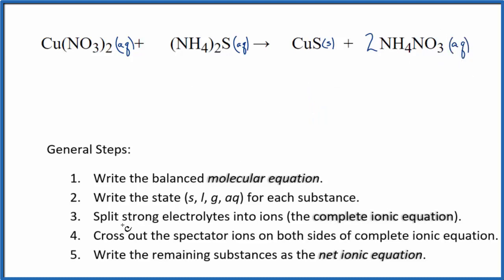Once we have these states, we can split the strong electrolytes into their ions for the complete ionic equation. So we don't know the charge on copper. It's a transition metal. But the whole nitrate ion, that's always 1 minus. Good one to remember. If we have two of them, this has to be 2 plus. So this is the copper 2 ion. And then we have two of these nitrate ions.